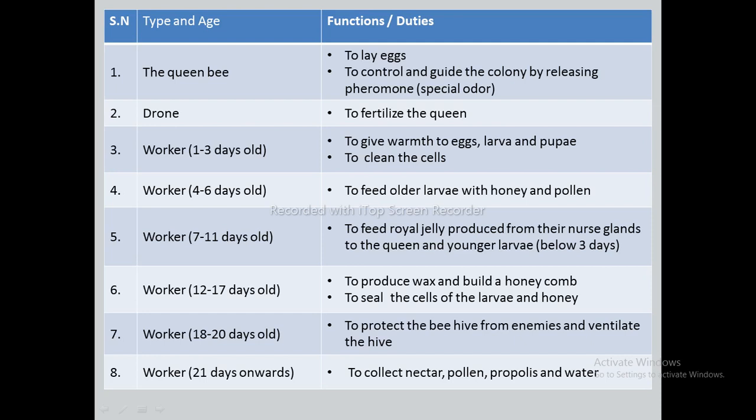Worker of 7 to 11 days: feeds royal jelly, produced from their nurse glands, to the queen and younger larvae below three days. Worker of 12 to 17 days: produces wax, builds honeycombs, and seals the cells of larvae and honey. Worker of 18 to 20 days: protects the beehive from enemies and ventilates the hive. Worker after 21 days: collects nectar, pollen, and propolis.